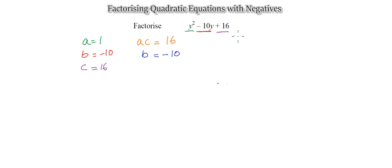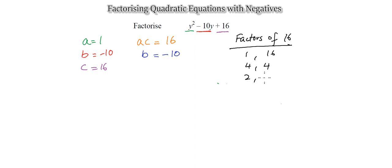Looking at factors of 16: we can get 1 and 16, 4 and 4, or 2 and 8. The best pair is 2 and 8, which multiplies to give 16 and adds to give 10. Since the product must be positive and the sum negative, both numbers are negative: minus 2 and minus 8.